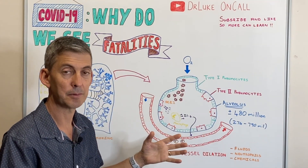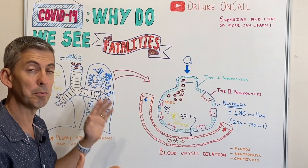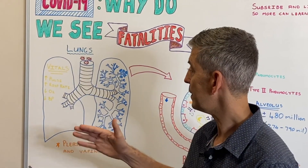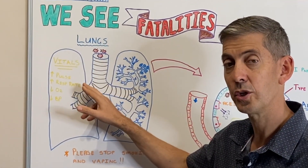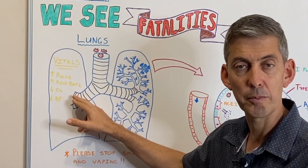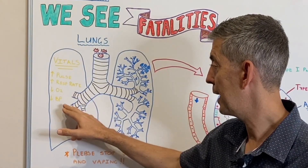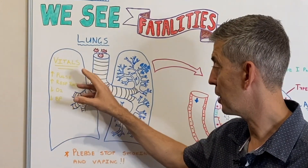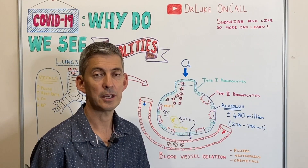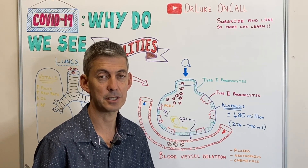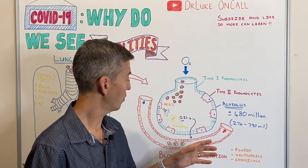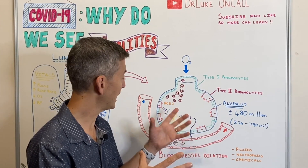If your immune system doesn't get the virus under control early — when it's still in the upper airway, the nose, the throat — and it actually gets down to the lower part of the lungs into the alveoli, then the problem starts. The more the immune system reacts, the more fluid and inflammation you get in the alveoli. Eventually it causes consolidation — collections of fluid in the lung — and a pneumonia develops. You get a bilateral pneumonia, meaning on both lungs, and the patient's oxygen levels really drop. When this deteriorates you get a condition called ARDS — acute respiratory distress syndrome — meaning there's not enough oxygen getting from the lungs to the body.